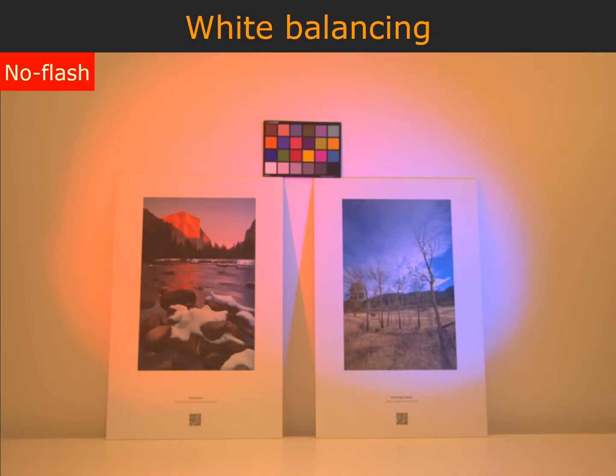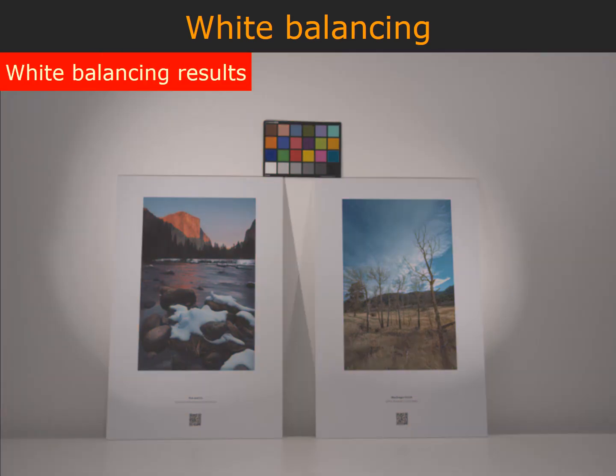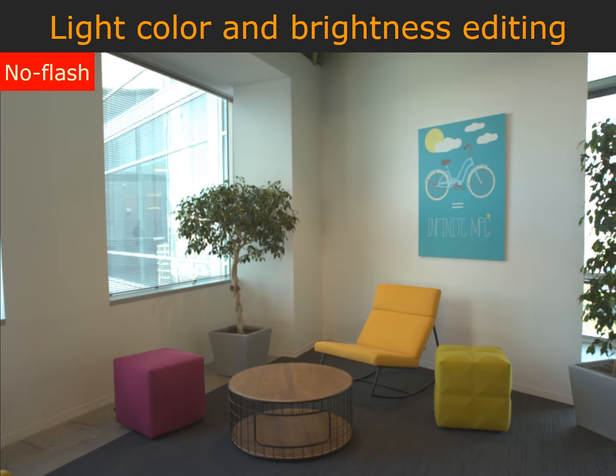The vast majority of white-balancing algorithms assume that the scene is lit by a single dominant light source. In contrast, we are able to estimate and remove the effect of spatially varying lighting by using the Hall constraint, simply by changing the illumination coefficients in each separated image. As shown here, our technique is able to produce visually appealing results. Similarly, we can also adjust the illuminant colors to non-neutral colors, as well as adjust the brightness of each light source.